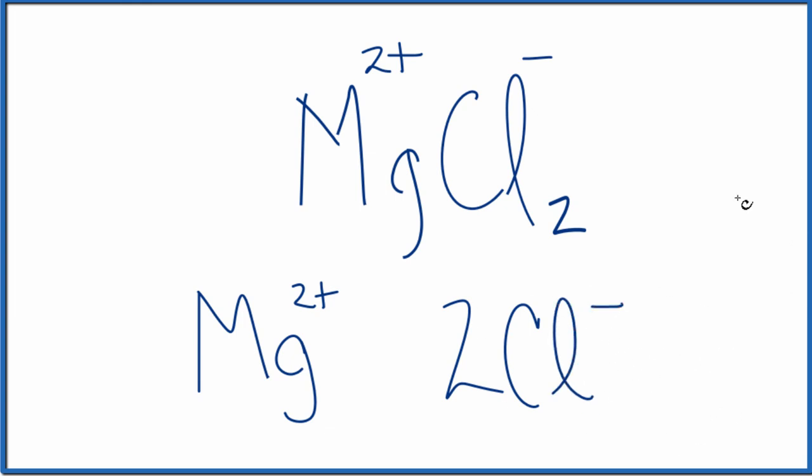So in answer to our question, we have a total of 1 plus 2 ions. We have 3 ions in MgCl2, 1 magnesium ion and 2 chloride ions. This is Dr. B, thanks for watching.